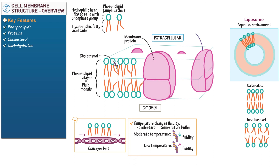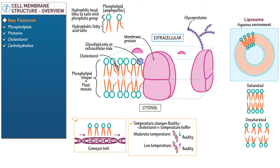Now show that glycoproteins are branched carbohydrates that covalently bind to proteins. Then indicate that glycolipids comprise carbohydrates covalently bound to lipids and that they are only found on the extracellular side of the bilayer. Extracellular glycolipids and glycoproteins function as cellular flags — they vary between species and between individuals within a species. As an important clinical correlation, denote that blood types refer to the carbohydrates present on the surface of red blood cells, used to distinguish between type A, B, AB, and type O blood.